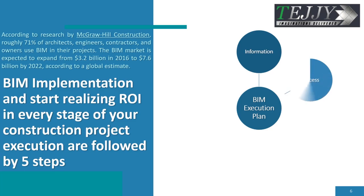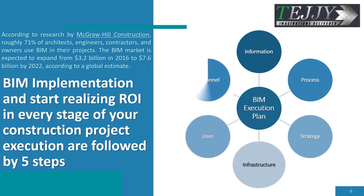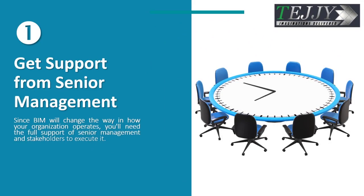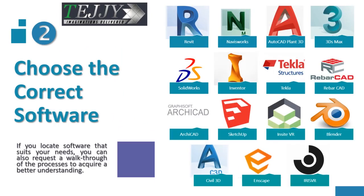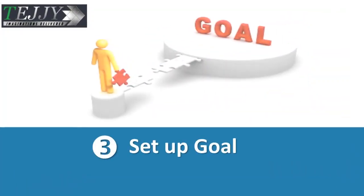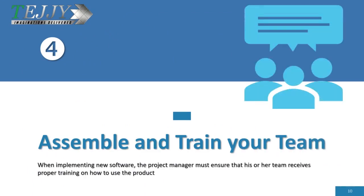BIM implementation and realizing ROI in every stage of your construction project execution are followed by five steps. Step 1: Get Support from Senior Management — since BIM will change the way your organization operates, you'll need the full support of senior management and stakeholders to execute it. Step 2: Choose the Correct Software — if you locate software that suits your needs, you can also request a walkthrough of the processes to acquire a better understanding. Step 3: Set Up Goals — BIM software can help you stay on track with your objectives and see how far you have come. Step 4: Assemble and Train Your Team — when implementing new software, the project manager must ensure that his or her team receives proper training on how to use the product.